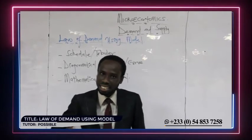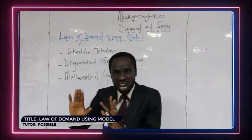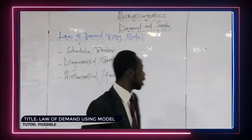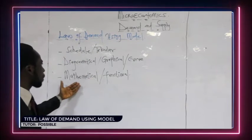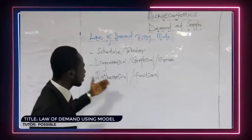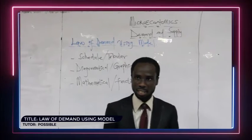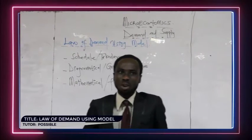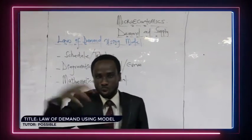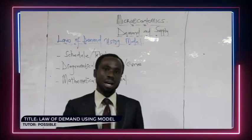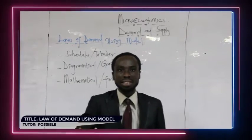Theory is the written part of economics which represents the real world situation. The model is a diagrammatic, tabular, mathematical, or functional representation of economic theory. In exams, when they say 'with the aid of a diagram,' the diagram represents the economic model, and the explanation represents the theory.